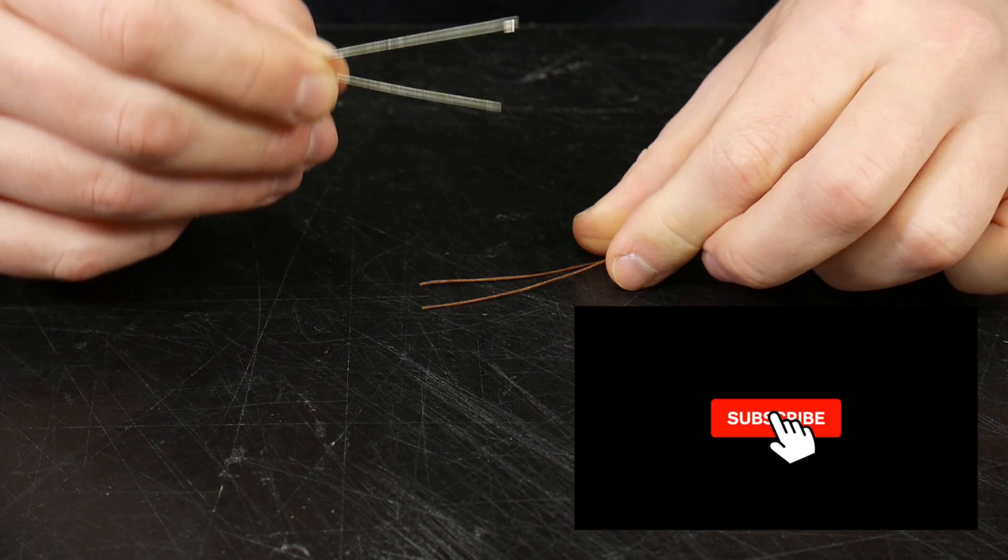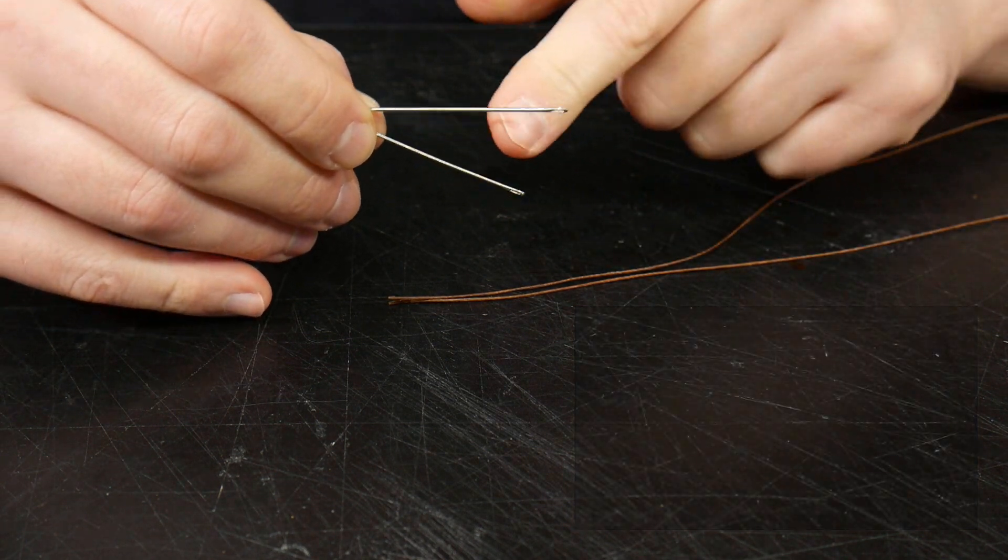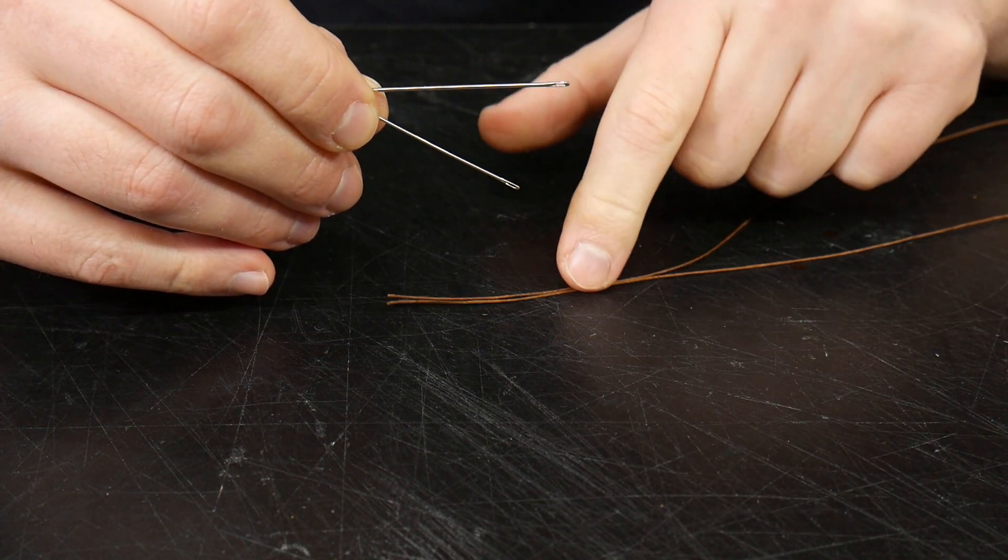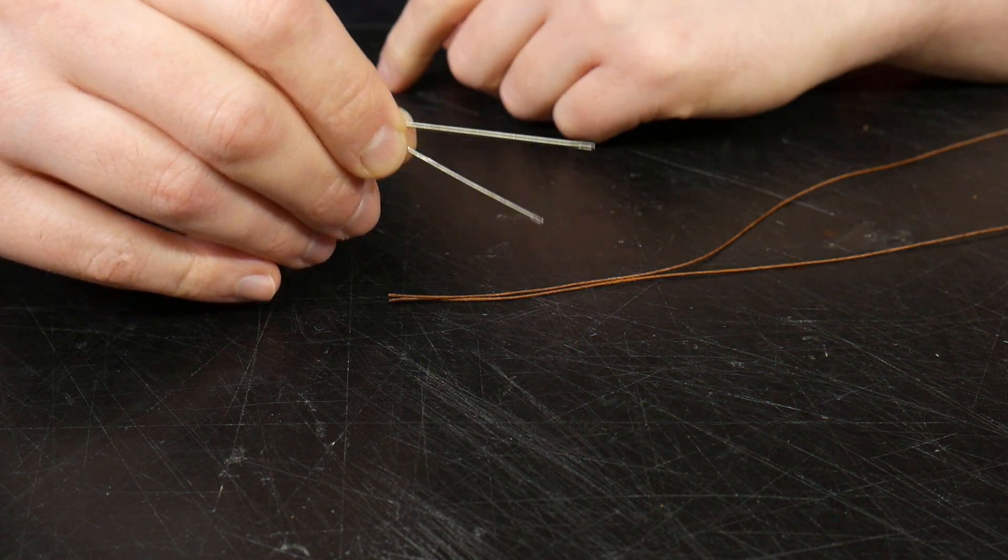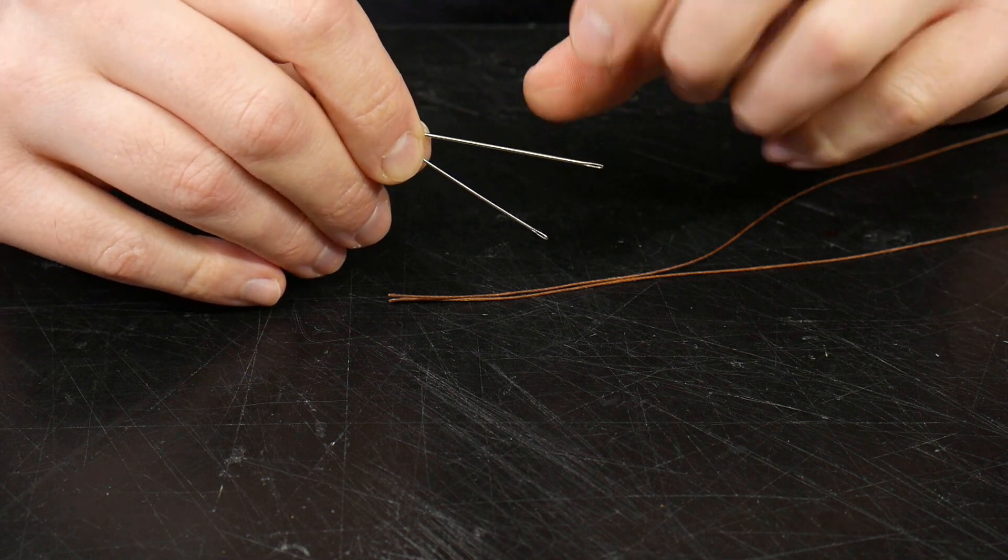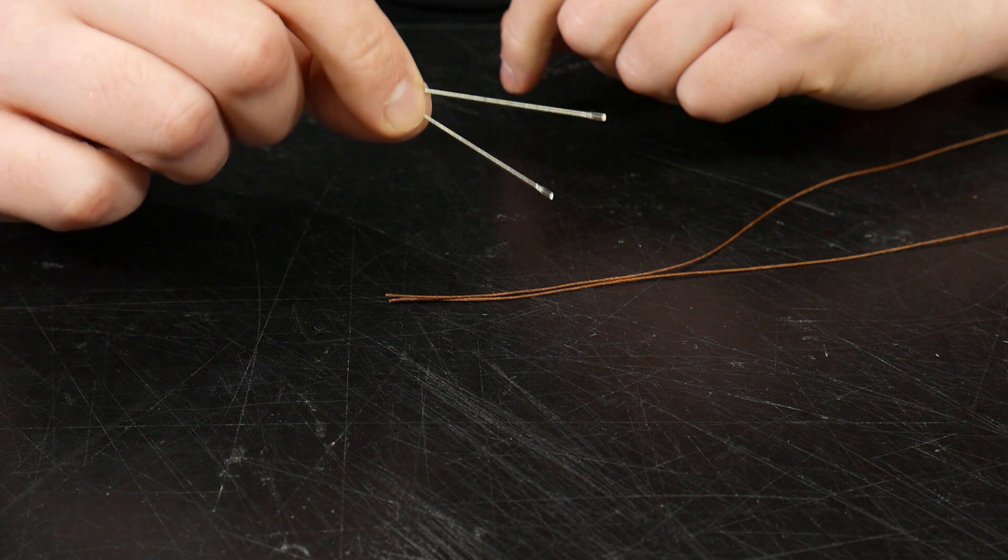So why would you want to use a smaller needle with thick thread? Well, the idea is you want to use the smallest needle possible that you can get your thread through, because larger needles are generally thicker, and when you have a thick needle with thick thread, it's going to make it that much harder to stitch.